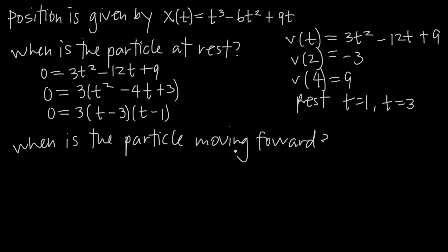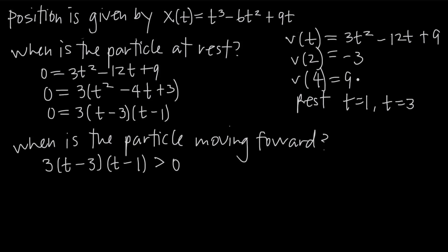When is the particle moving forward? We need to figure out where the velocity function is positive. We've already factored the velocity function into 3 times quantity t minus 3 times quantity t minus 1. We need this whole expression to be greater than 0, meaning velocity is greater than 0, which means the particle is moving forward. At t equals 2 velocity was negative — moving backwards — and at t equals 4 velocity was positive — moving forwards.